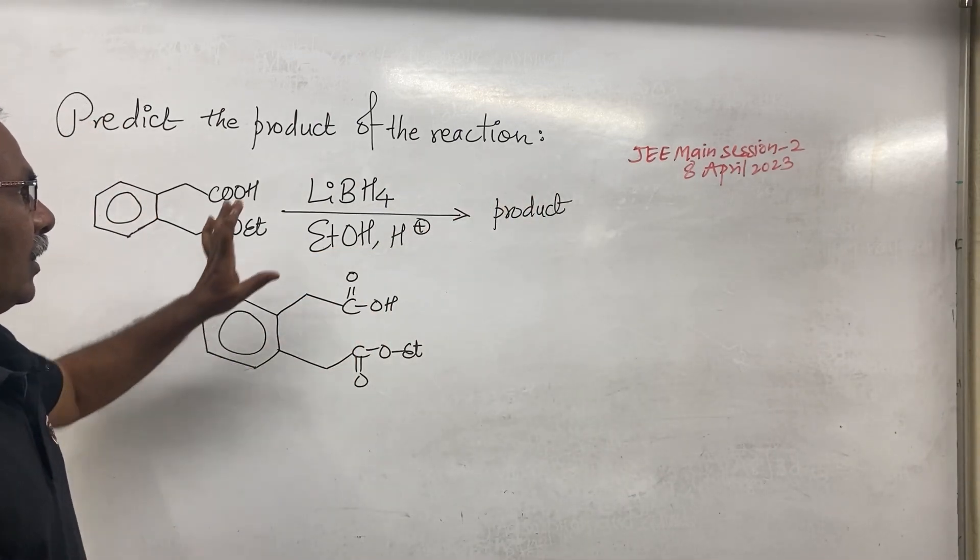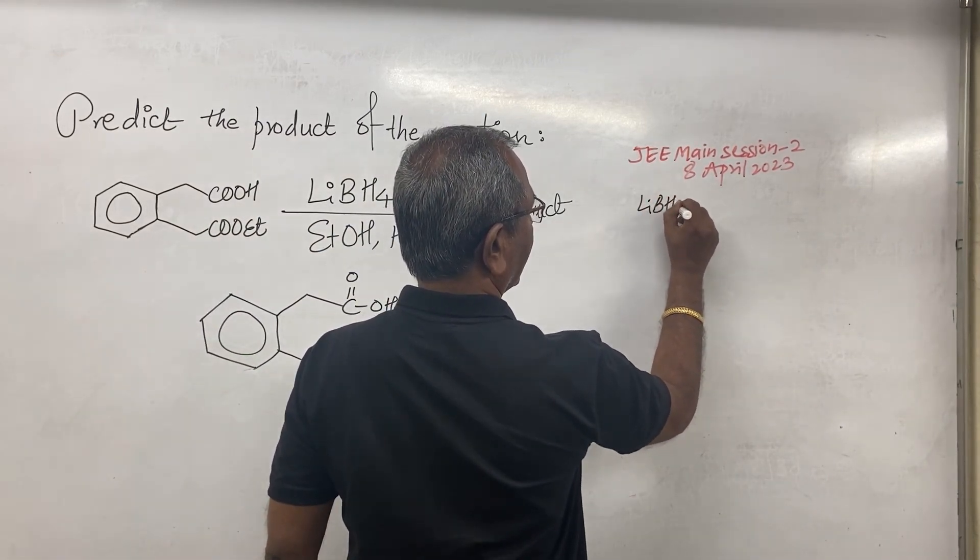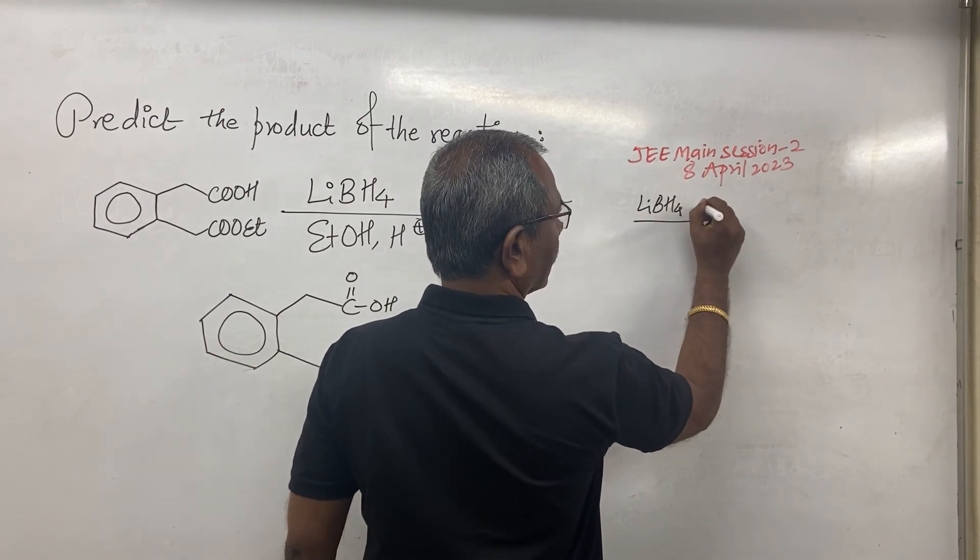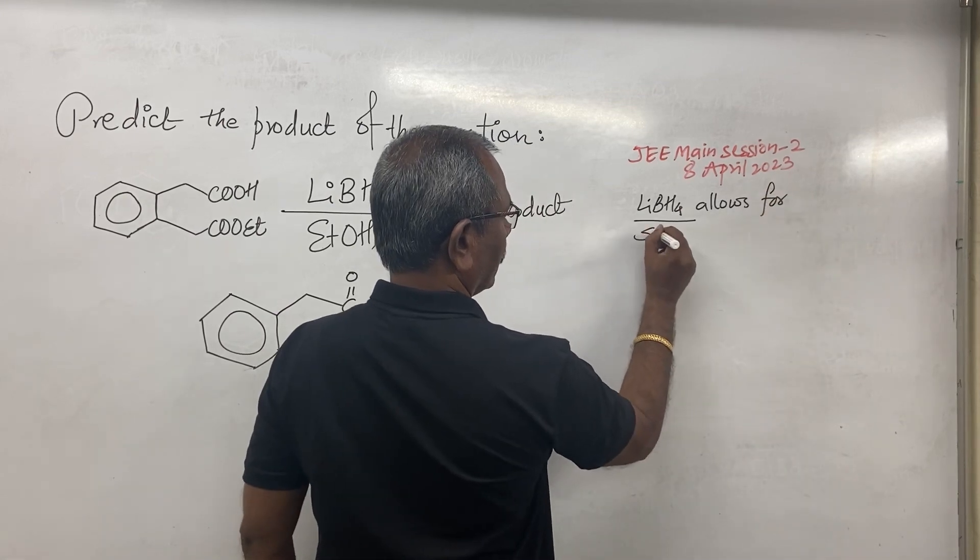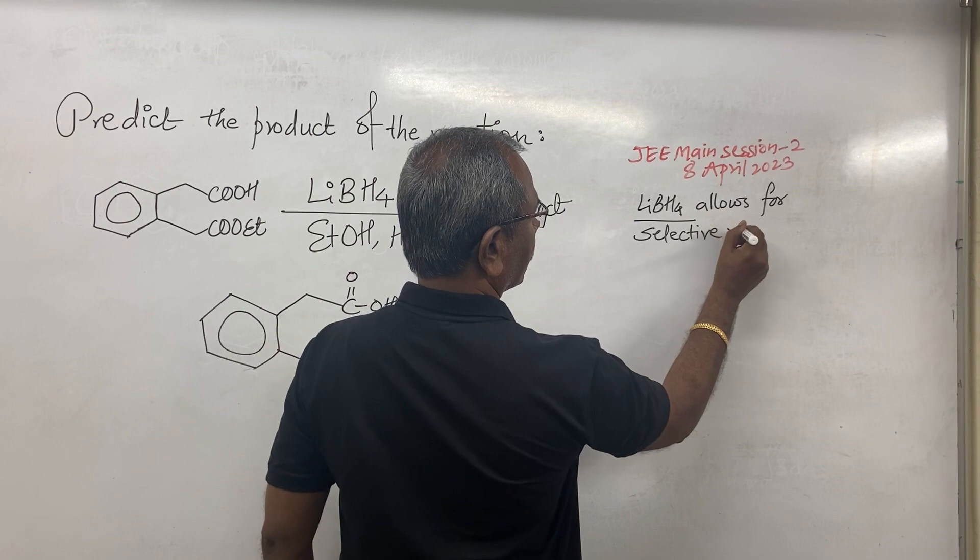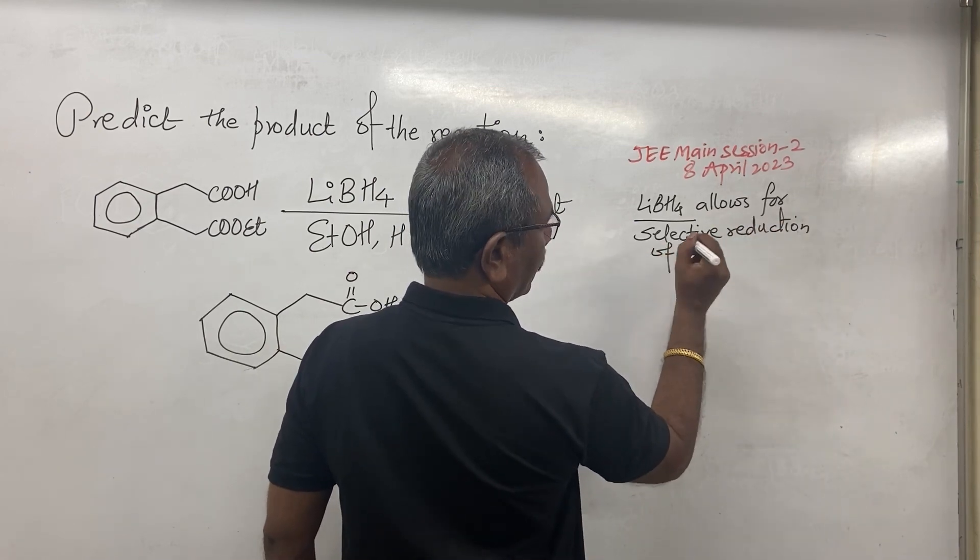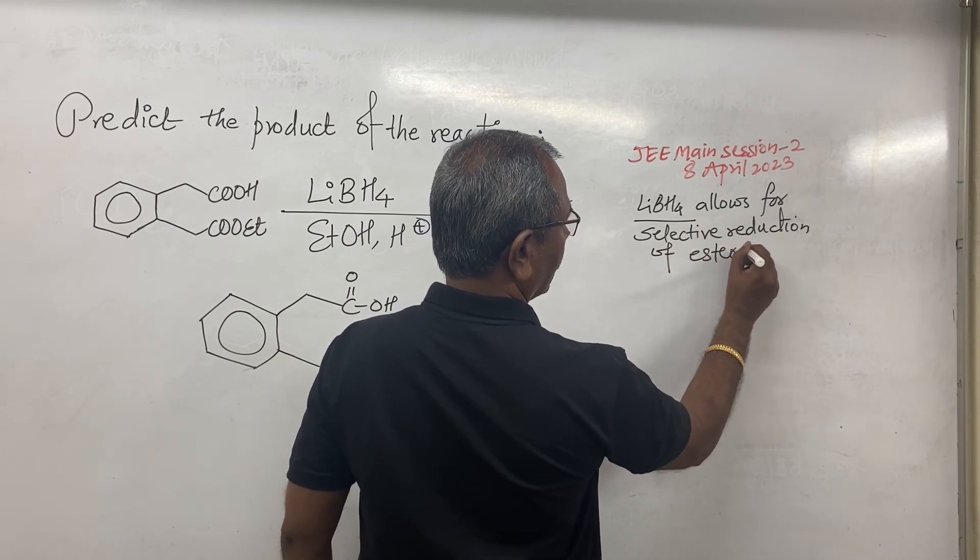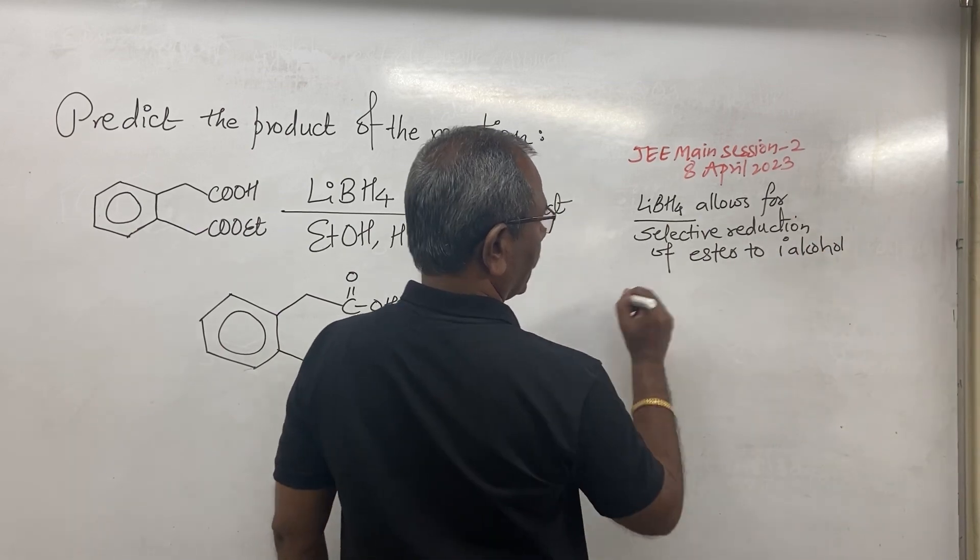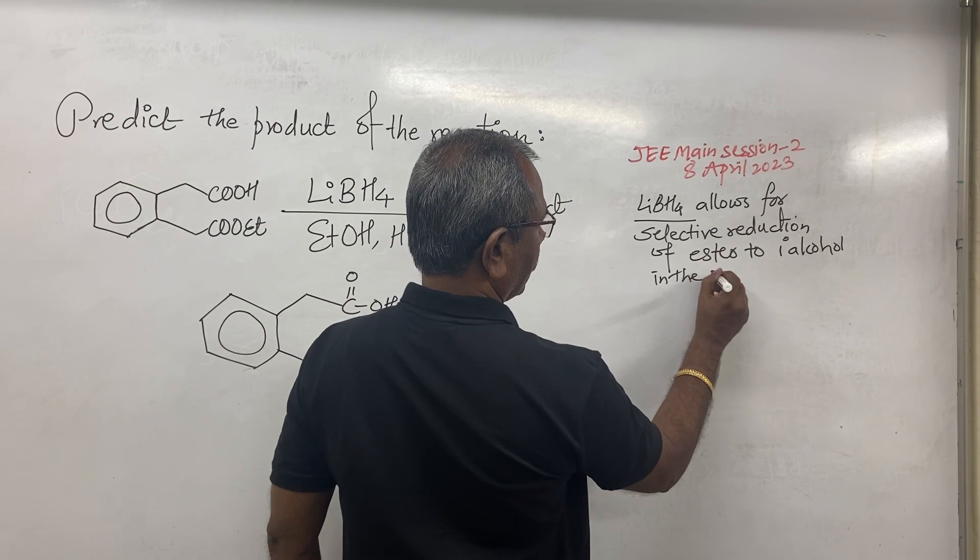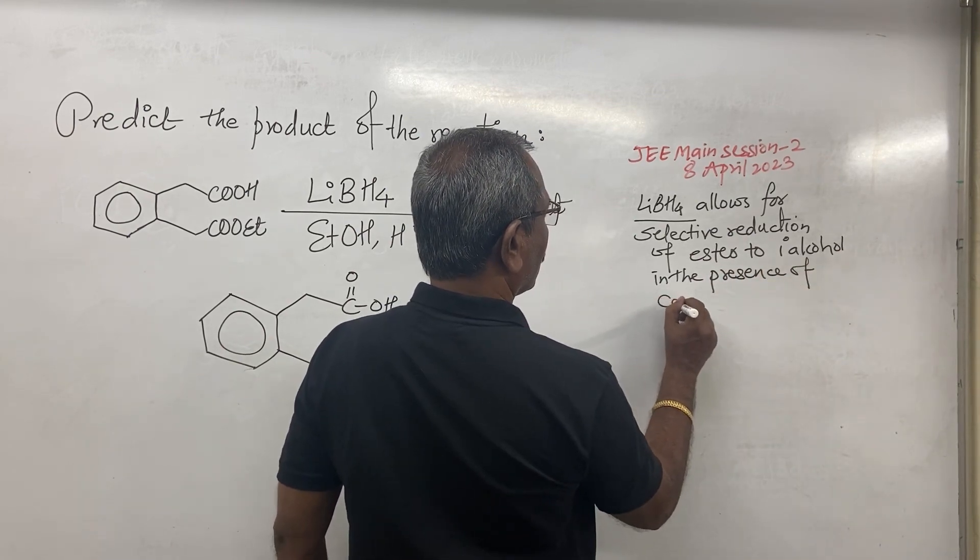Now here lithium borohydride allows for selective reduction of ester to primary alcohols in the presence of carboxylic acid.